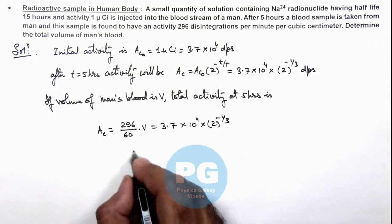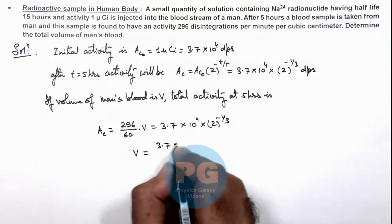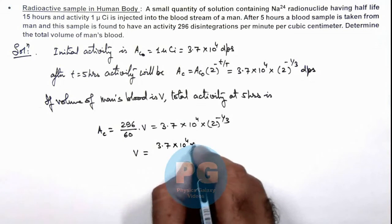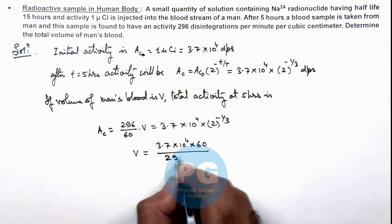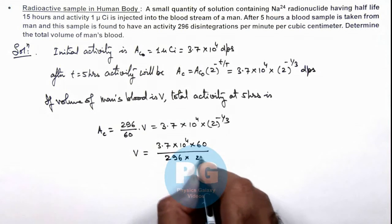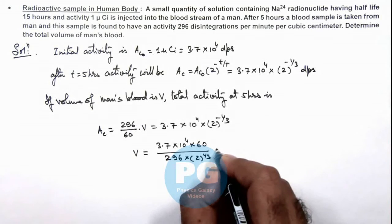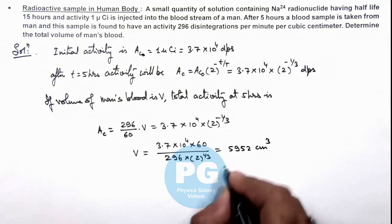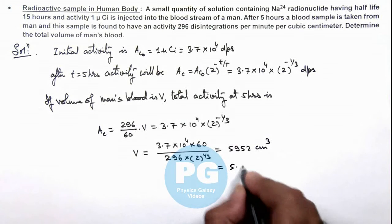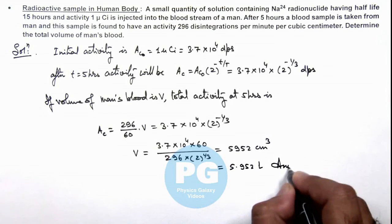If we simplify this we get the volume of man's blood which is 3.7 × 10⁴ × 60 divided by 296 × 2¹/³. On calculating this we get 5952 centimeter cube, which can be written as 5.952 liters. So that is the result of this problem.